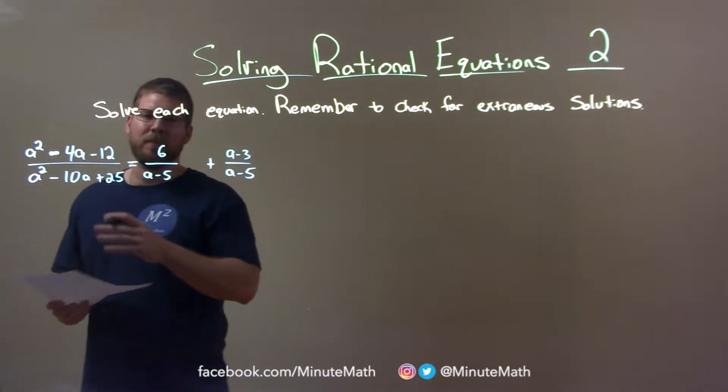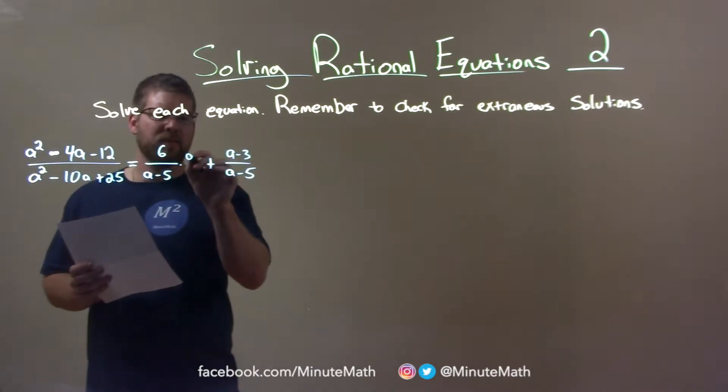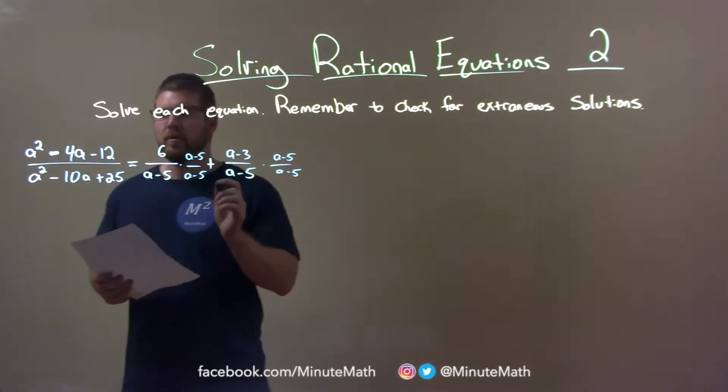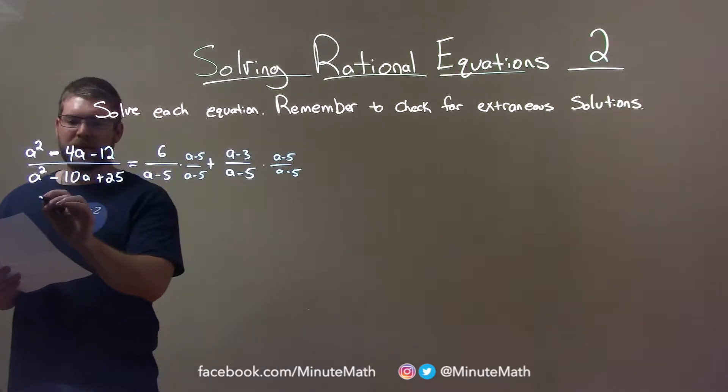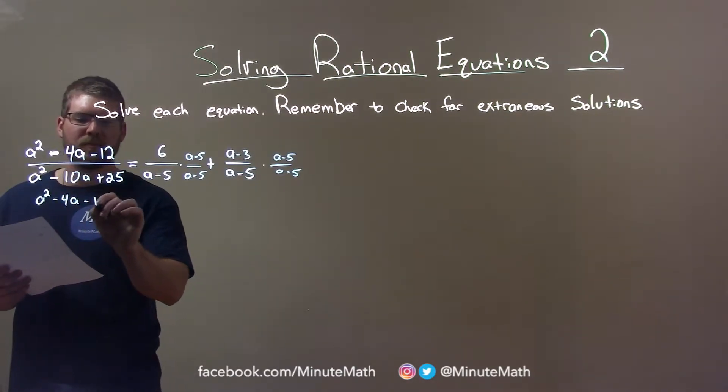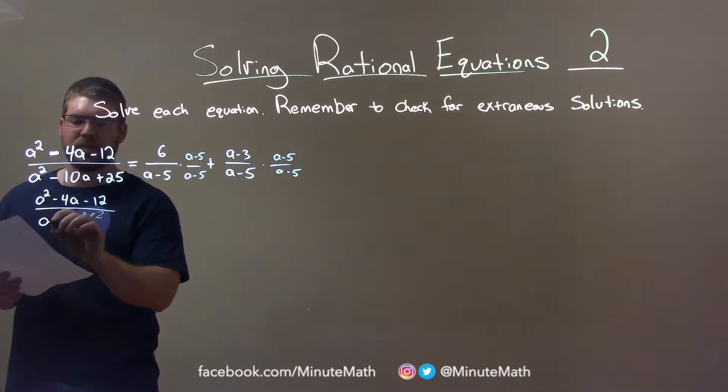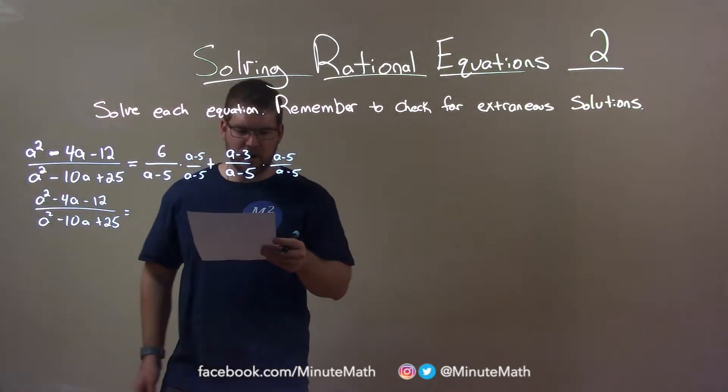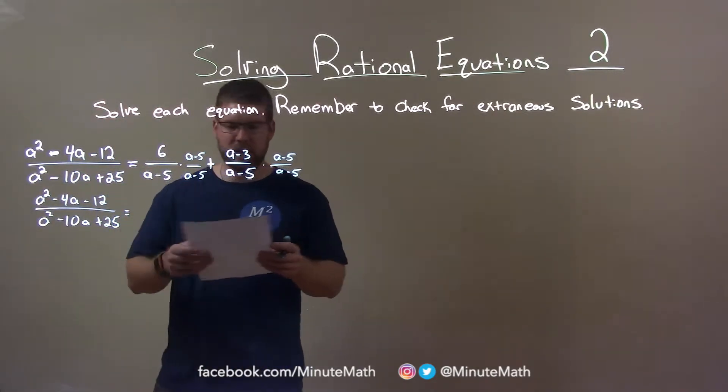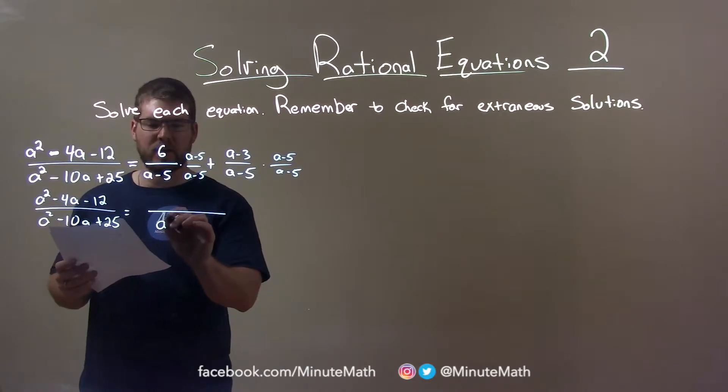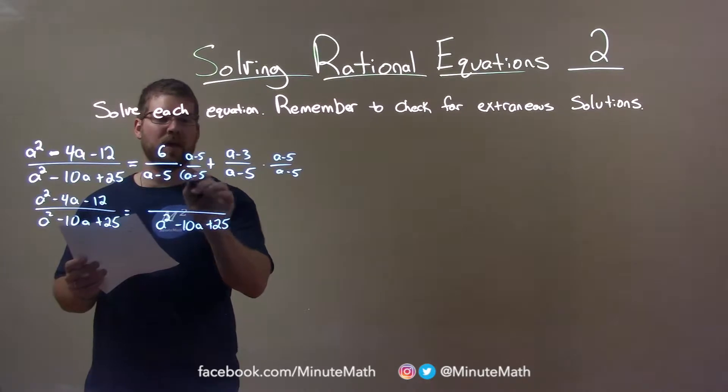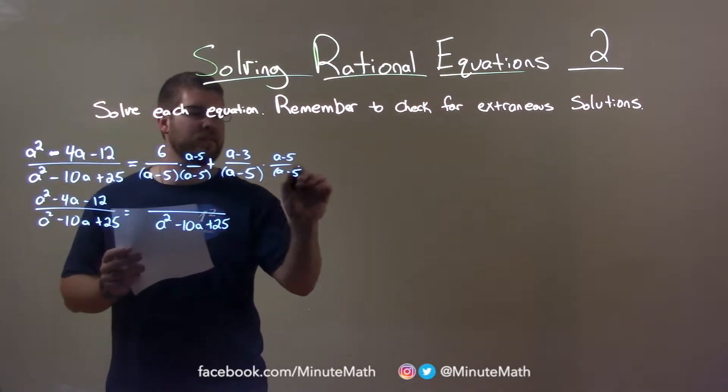If I do this, multiply by a minus 5 over a minus 5 times a minus 5 over a minus 5. What we have is: keep this thing the same, a squared minus 4a minus 12 over a squared minus 10a plus 25. Here, I know that denominator is going to be the same when I multiply it out. So this whole thing is going to have that same denominator, a squared minus 10a plus 25. You can foil that to make sure.